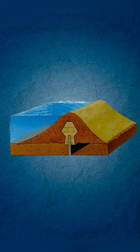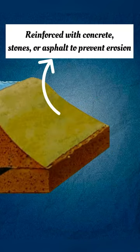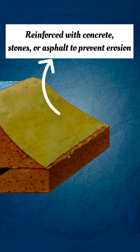The earthen embankment is sloped on both sides and the downstream side is reinforced with concrete, stones, or asphalt to prevent erosion.